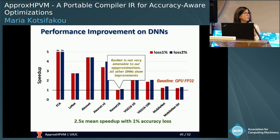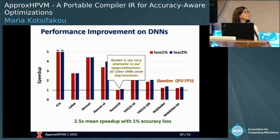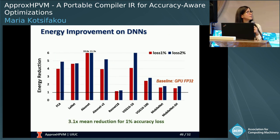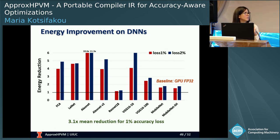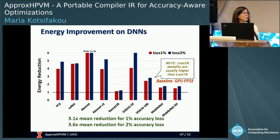The exception is ResNet, which for the specific approximation choices we made, we do not find very amenable to them. We see very similar behavior for energy improvement — a similar graph where the Y-axis shows energy reduction results. With the exception of ResNet, we again see sizable improvements, with a mean of 3.1x for the one percent accuracy case, going up to 3.x for the two percent case.